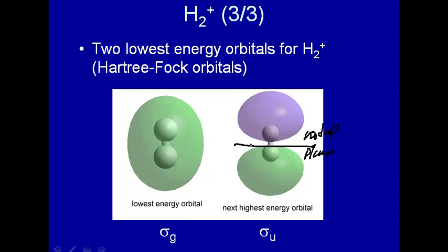So a nodal plane means there's no electron density. So here you have electron density between the two atoms, you're happy. But then when you go to this next higher energy orbital, you have no electron density. In fact, there's a nodal plane.